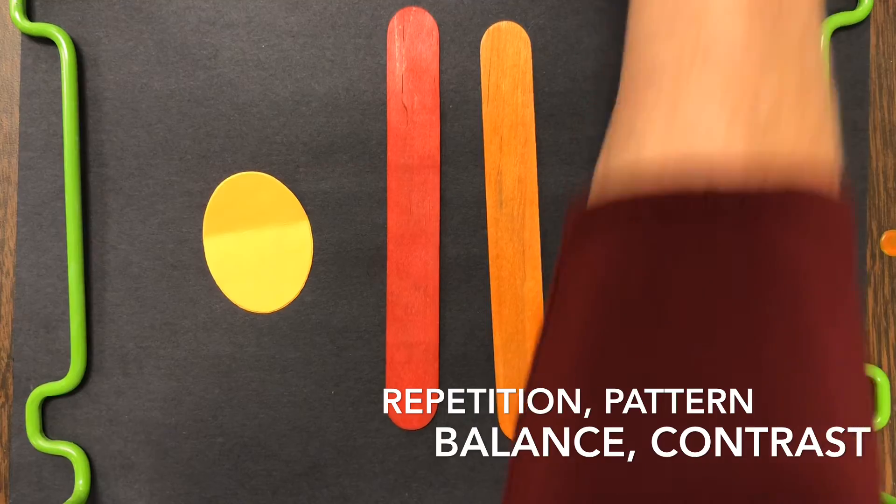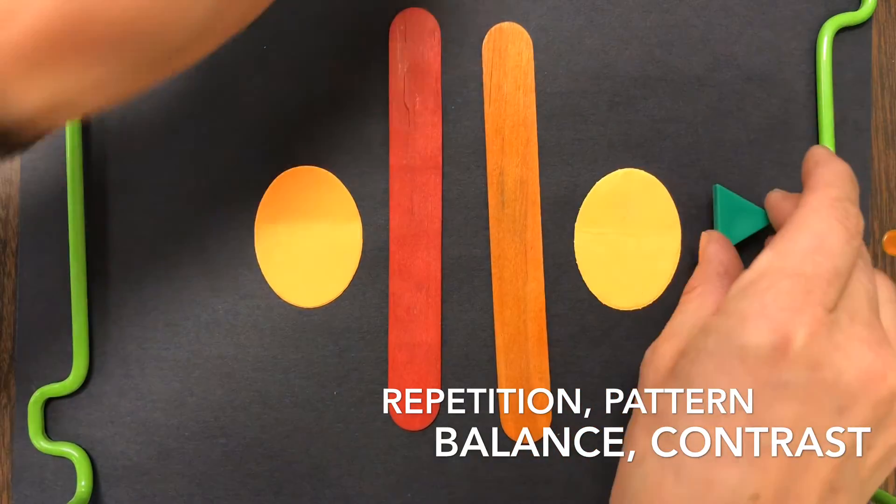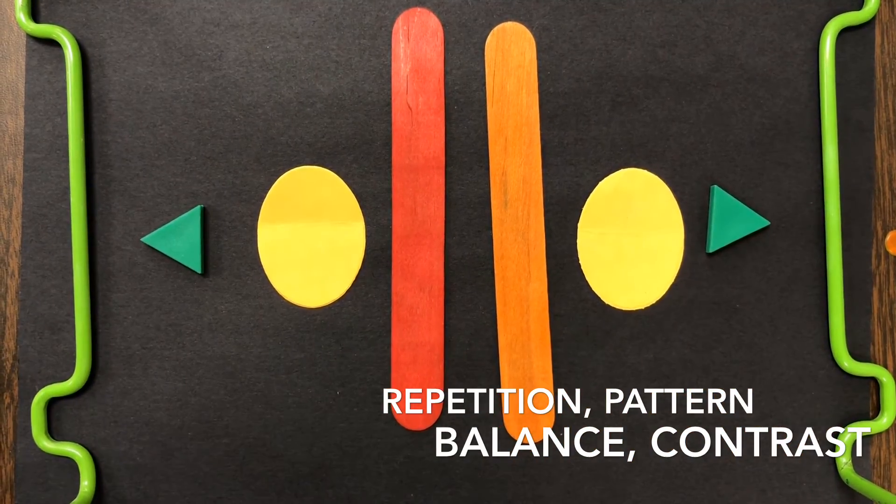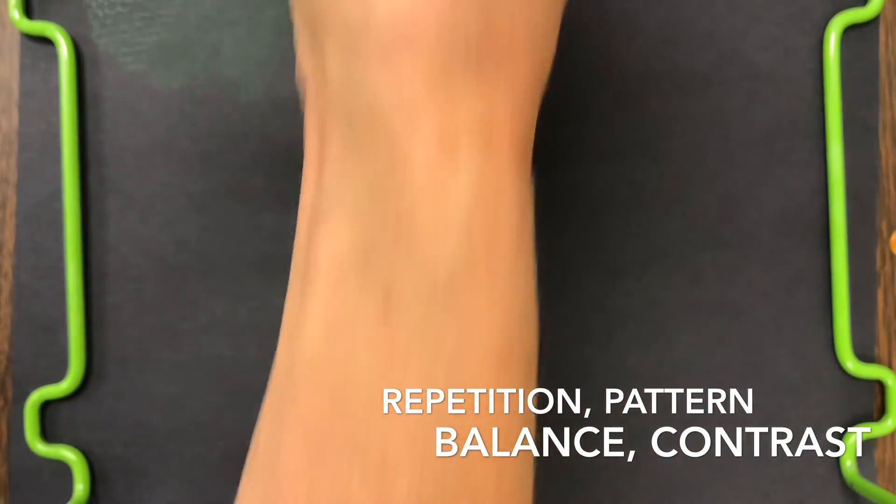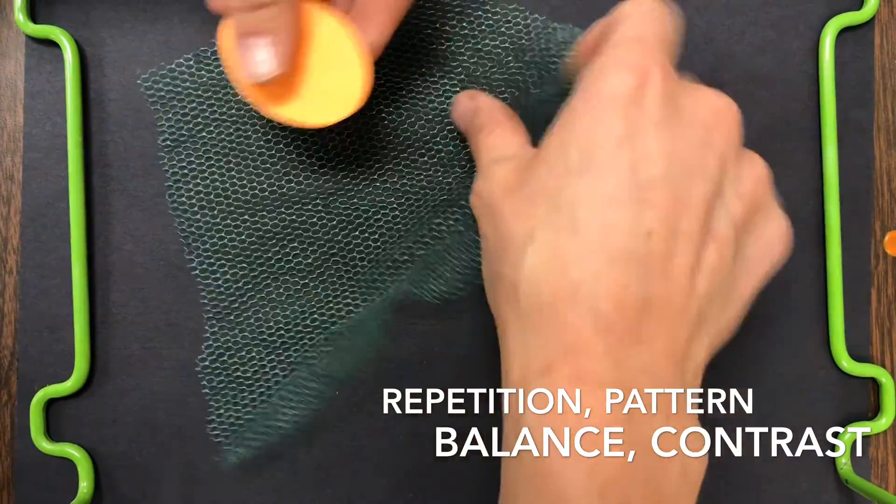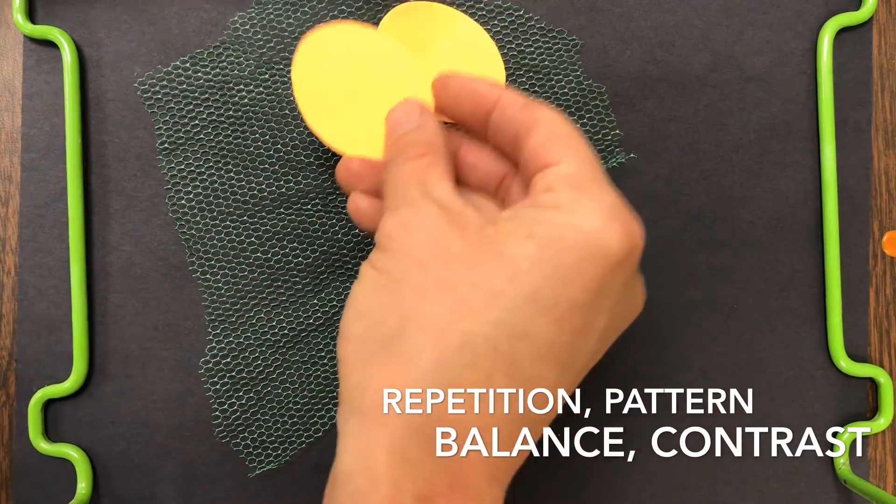In a minute we're going to separate and do this activity that you're seeing now. I'm going to give you specific words like contrast or emphasis, and you're going to have to use the objects on the tables to show me that you know how to do that.